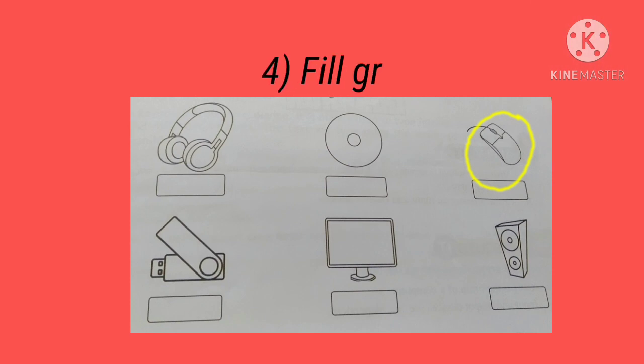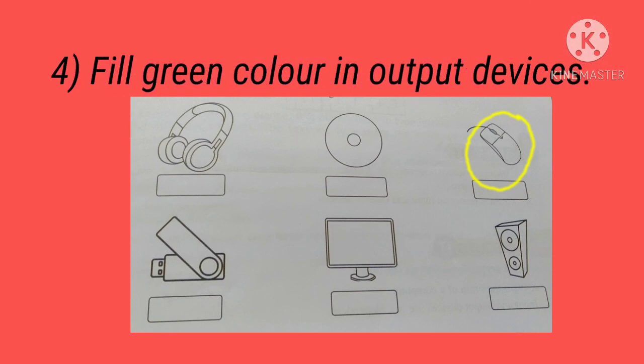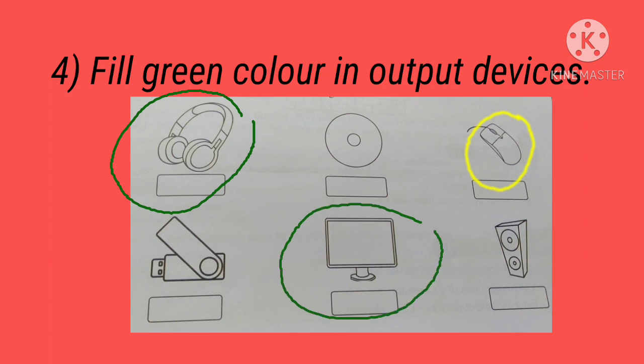Now number 4: fill green color in output devices. You have to identify the output devices and color them with green. The first output device we can see here is the headphone. The second output device is the monitor. And the third one is the speaker.